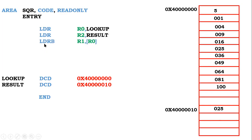Next, LDRB — load register byte — loads from the memory location whose address is given by R0. The value of R0 is the base address, which points to the first location in the lookup table containing the 8-bit input number 5. That number is loaded into R1. Then we ADD the content of R0 with R1: base address plus 5 gives us 4 followed by 0 0 0 0 5.